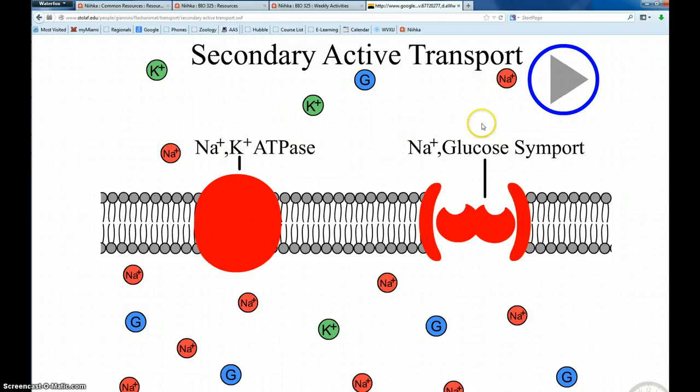Now, out here, this would be the lumen of the gut. In other words, where digested food is moving through. And inside here is the inside of the cell. This is the co-transport molecule here. One spot for sodium, one spot for glucose.